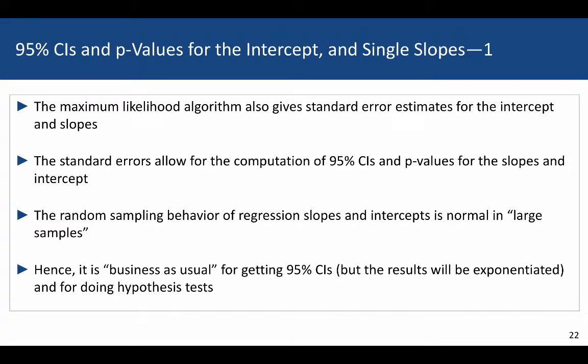As we saw with logistic regression, the maximum likelihood algorithm also gives standard error estimates for the intercept and slopes. The standard errors allow for the computation of 95% confidence intervals and p-values for these slopes and intercepts, and then the results can be exponentiated to get 95% confidence intervals on the incidence rate and incidence rate ratio scales. The behavior of regression slopes and intercepts is approximately normal in large samples, so we start with our estimate and subtract two standard errors to get a 95% confidence interval.